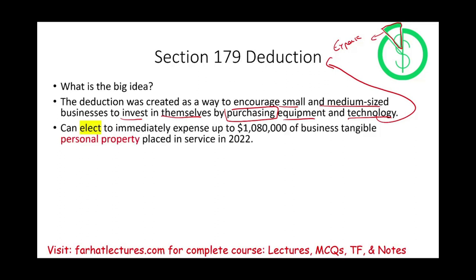The company can elect — notice it's an election, you can take it or you don't have to — to immediately expense up to $1,080,000 of business tangible personal property. That amount is for 2022, so if you're watching this in 2023, 2025, or 2026, the amount will be different. It changes from year to year.